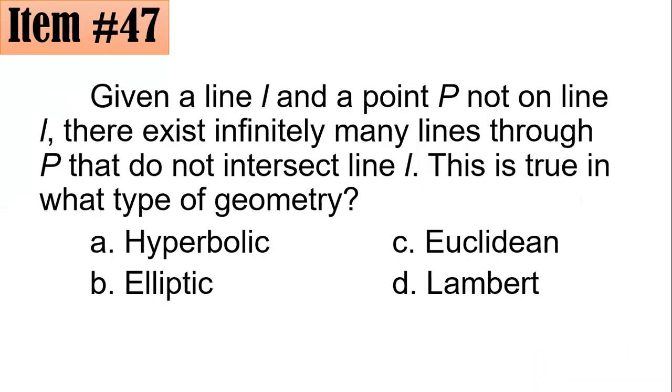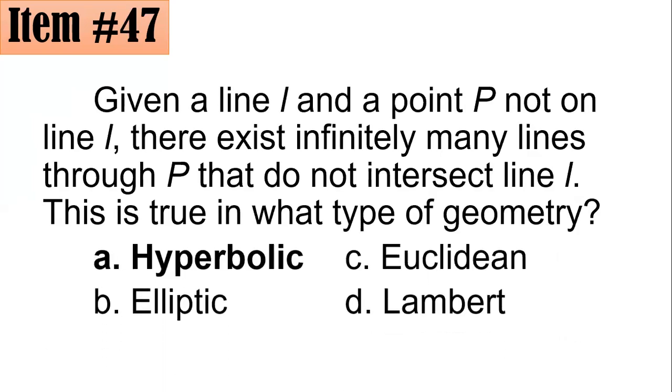Item 47. Given a line L and a point P not on line L, there exists infinitely many lines through P that do not intersect line L. So this is true in what type of geometry? Is it hyperbolic, elliptic, Euclidean, or Lambert? And the correct answer is hyperbolic. In fact, we have what we call parallel lines and you have your ultra-parallel lines in your hyperbolic geometry. Using Playfair's postulate, like in the Euclidean plane, there's exactly one. In hyperbolic, there are infinitely many, but for elliptic, there's none. So letter A is the correct answer here. So we're talking about your modern geometry a bit only.